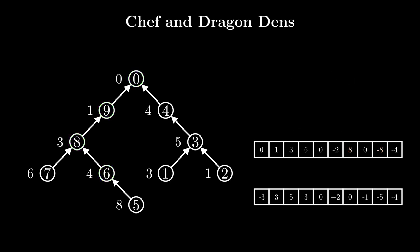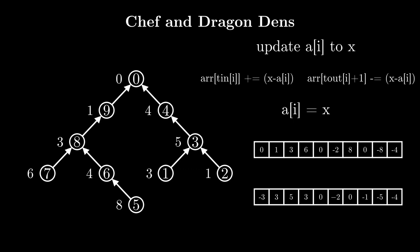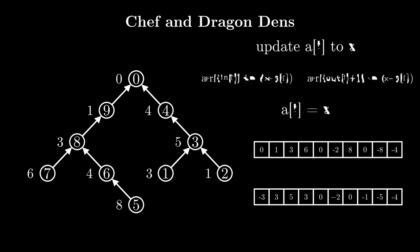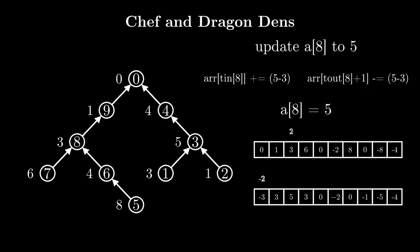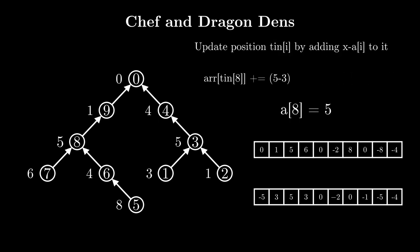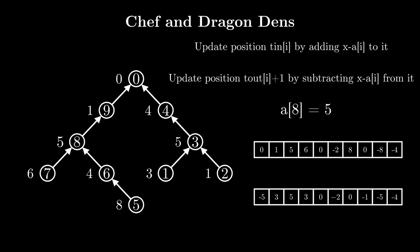Now let's consider how to deal with updates. An update changes the value of a[i]: if we update a[i] to x, its contribution to arr changes by x - a[i] at two points — t_in[i] and t_out[i]+1. So we add x - a[i] to arr[t_in[i]] and subtract x - a[i] from arr[t_out[i]+1], then update a[i] to x. For example, if we update index 8 to 5, we add 2 to arr[t_in[8]] and subtract 2 from arr[t_out[8]+1], then set a[8] to 5. This can be handled with a sum segment tree using point updates.